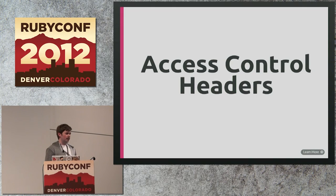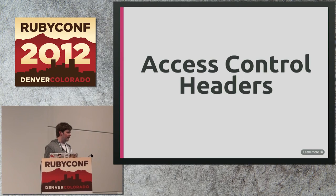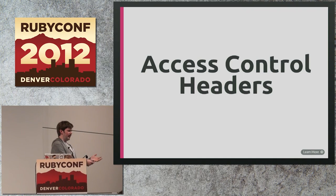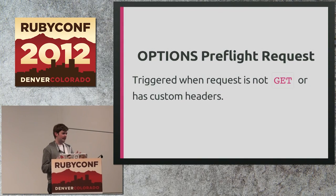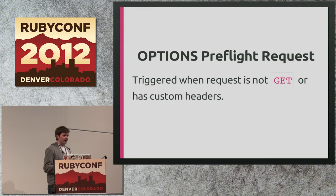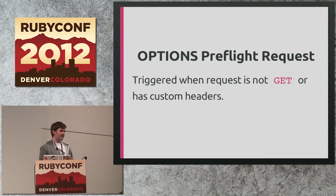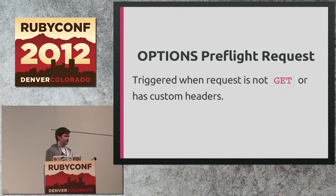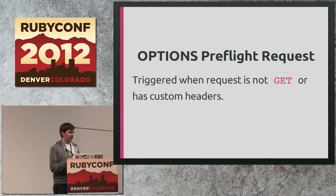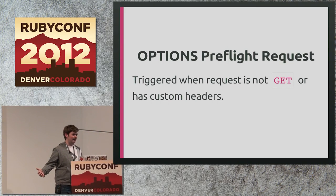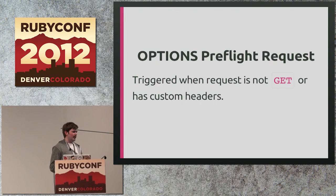CORS is basically just a protocol where browsers and servers have agreed on a set of headers that tell you whether or not a given domain is allowed to make Ajax requests to it. For a GET request — a vanilla GET request with no custom headers — your browser will just send that GET request to the server, and the server has the option to respond with an Access-Control-Allow-Origin header. That header basically says whether or not the origin domain is approved: if I'm on app.myapp.com making a request to api.myapp.com, then api.myapp.com has the opportunity to either approve or deny that origin.